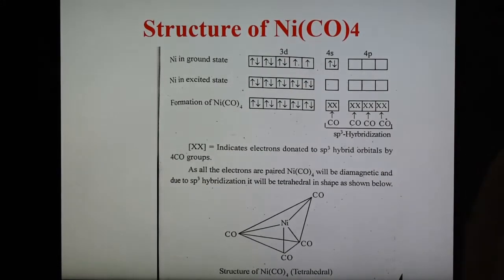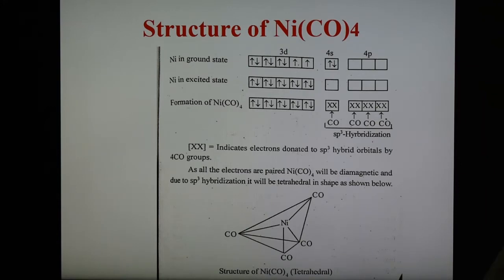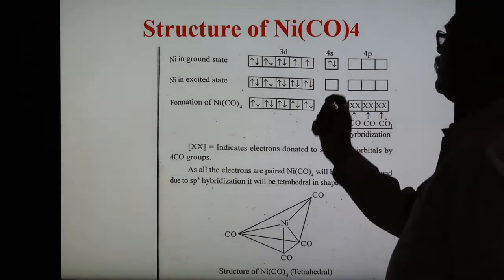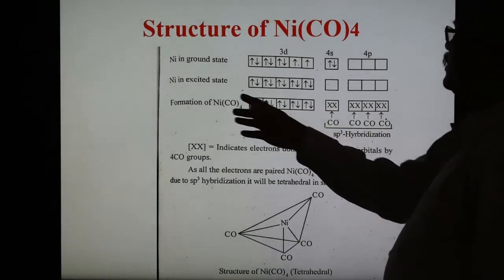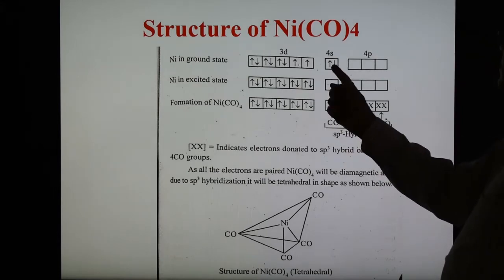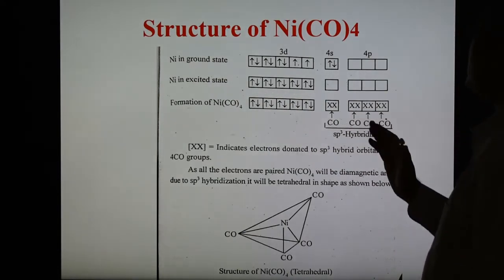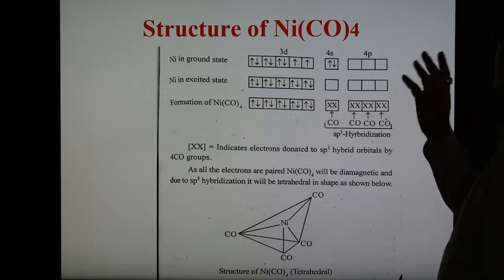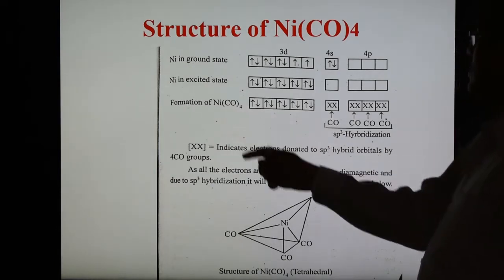The first compound is nickel tetracarbonyl. The central atom is nickel with atomic number 28. In the ground state, nickel has 3d8 and 4s2 electronic configuration. To undergo sp3 hybridization, the 4s orbital must be made vacant. The electrons from 4s are shifted to the 3d orbital. In the excited state, 1 four-s and 3 four-p orbitals undergo hybridization, forming 4 hybrid orbitals of equal energy.